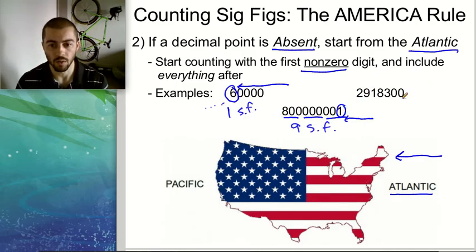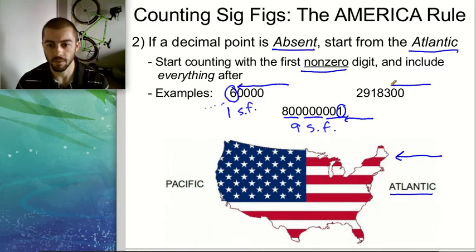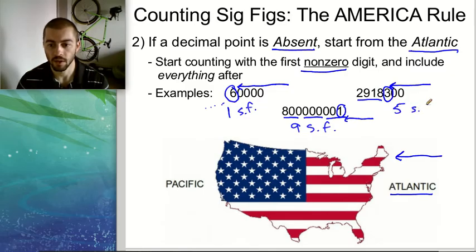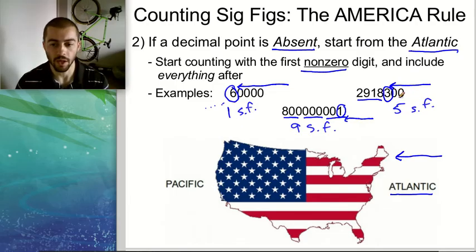For our last Atlantic rule example, we have no decimal place so it's absent. We start from the Atlantic on the right side, come in, and the first non-zero number we hit is 3. We count 3 plus the other four numbers, giving us a total of five sig figs.